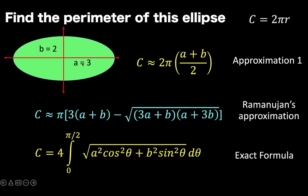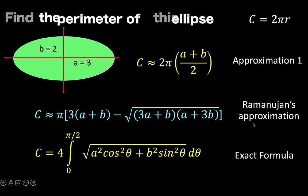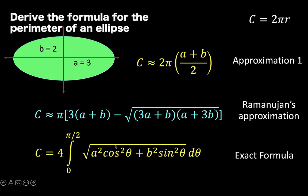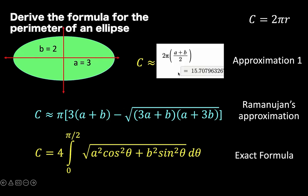Let's say we have an ellipse with a equals 3 and b equals 2. What is the perimeter of this ellipse? Using these two approximation formulas, let's compare the results with the definite integration formula. Using Desmos graphing calculator, if a equals 3 and b equals 2, then the formula C equals 2 pi times the quantity a plus b over 2 gives us a value of 15.70796326, rounded to 8 decimal places.